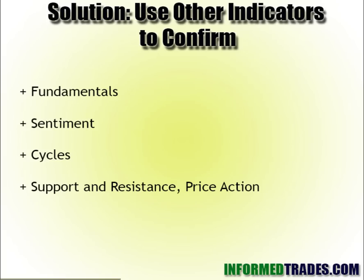So, solutions. You can incorporate other tools in addition to the moving average crossover. For instance, if you have a moving average crossover that gives a buy signal, what are the fundamentals telling you? Is there some type of fundamental indicator you rely on? Market sentiment — are there sentiment indicators, or what's going on in the news? Cycle analysis — we have a video on Martin Armstrong, who's very big on that. There are lots of cycles in the stock market, sector rotation, and seasonality that can all be incorporated. One of my personal favorites is support, resistance, or price action analysis. I think if you incorporate that with some of these other standard textbook indicators, you can really get the strategies you're looking for that make active trading worth it.